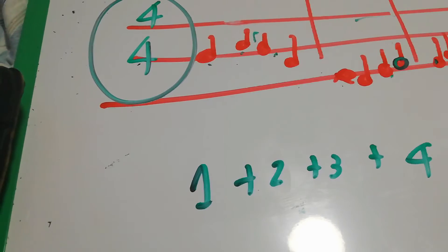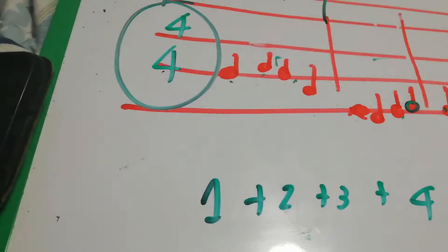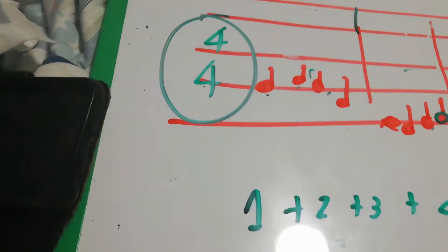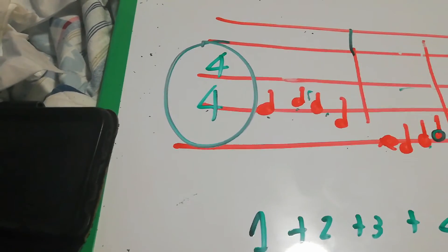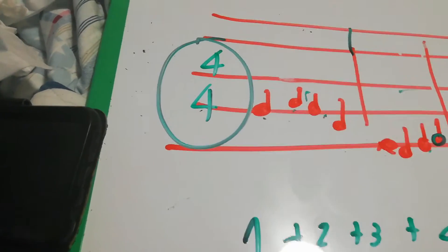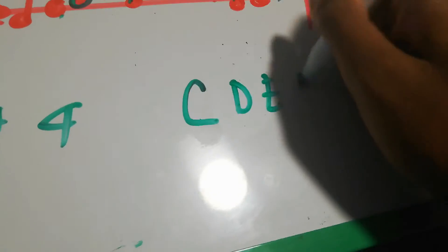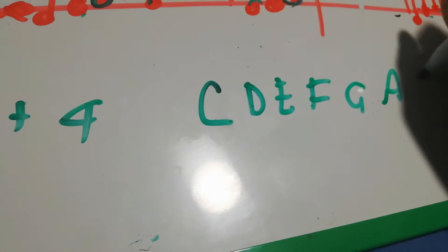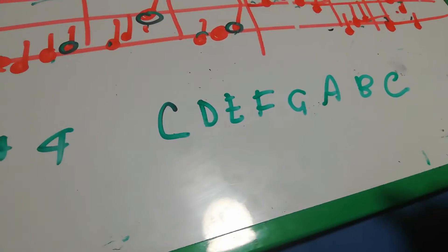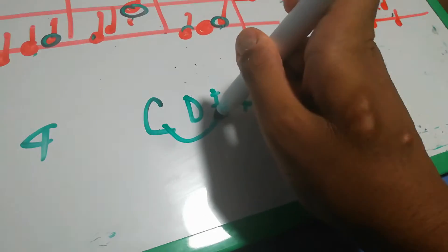We also need to know the key signature. Now as you can see there's no sharps, no flats, so this means this is in the C major scale. C major scale is the most basic scale: C D E F G A B C, and it uses a third interval chord. It uses C G for left hand.